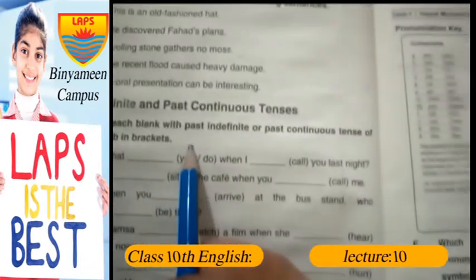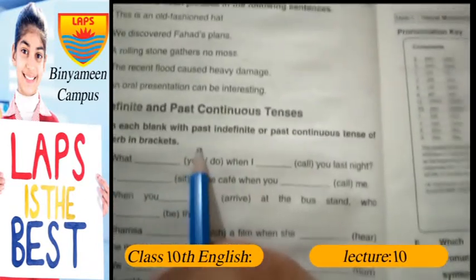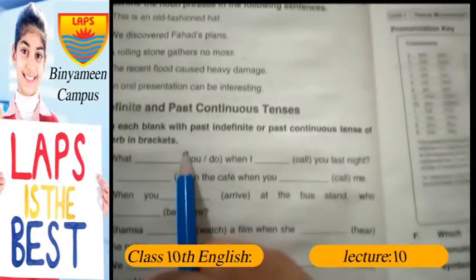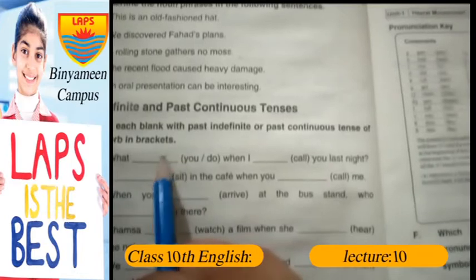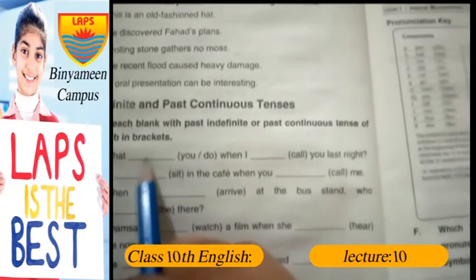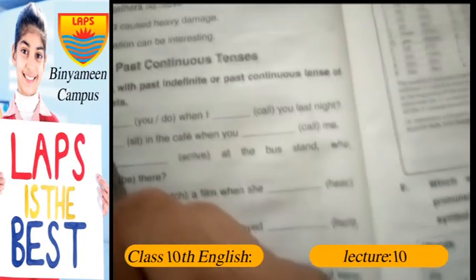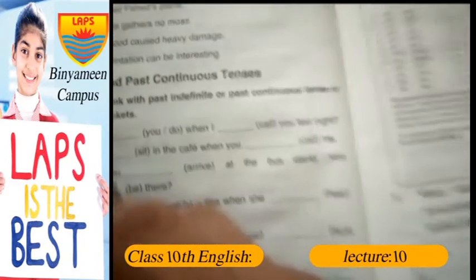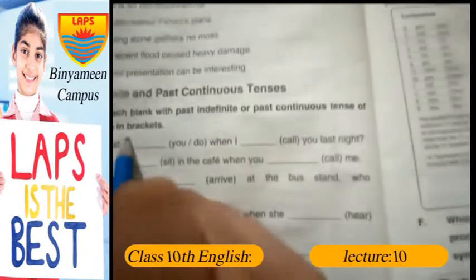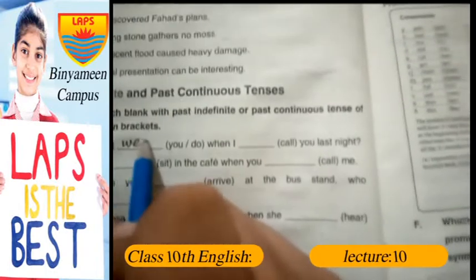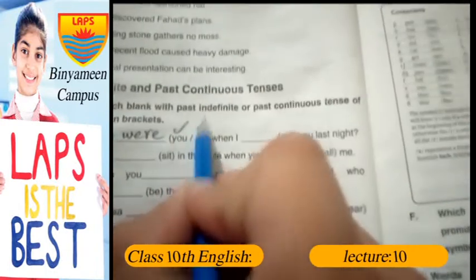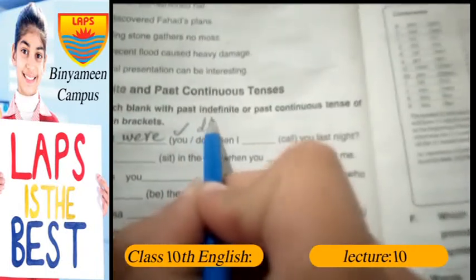The first sentence is: What were you doing when I called you? We write D-O-I-N-G, doing, and C-A-L-L-E-D, called you.